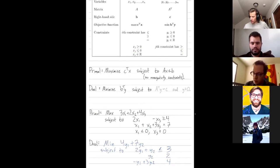My second variable x2, there's no bound on x2. x2 is any real number. So that means my second constraint should be an equality.